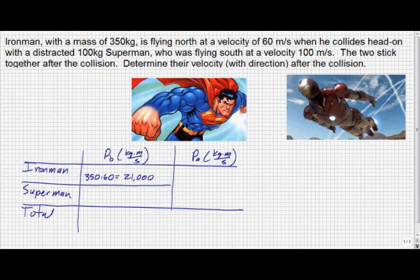Superman, however, is 100 kilograms, much less mass, and he's flying south at 100 meters per second. We need to put a negative sign in front of our velocity to the south, because that's in the opposite direction as the velocity of Iron Man. So that's going to be 100 kilograms times negative 100 meters per second, or negative 10,000 kilogram meters per second.